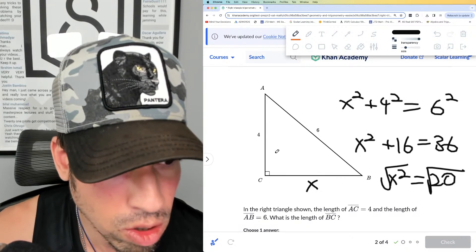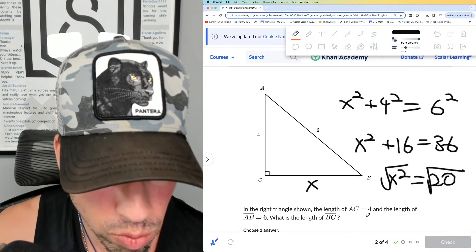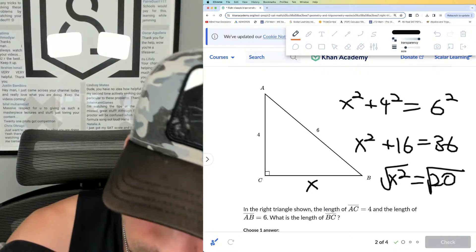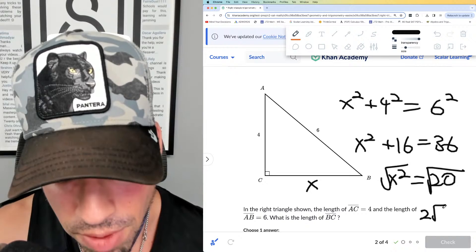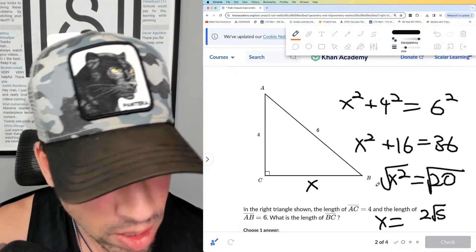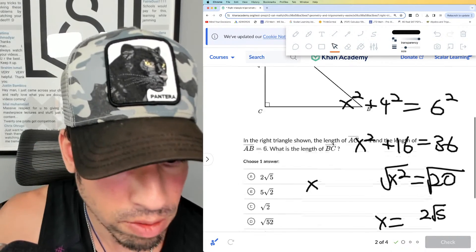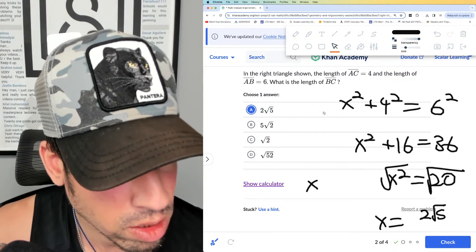And then x, or the unknown, is equal to the square root of 20. Now to simplify this, remembering that 20 is 4 times 5, we take the square root of 4, which is 2, and the 5 stays inside. And that is our length of BC. Let's see if they have it—2√5, there it is. A is the winner, done.